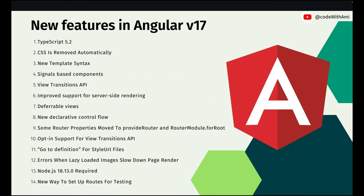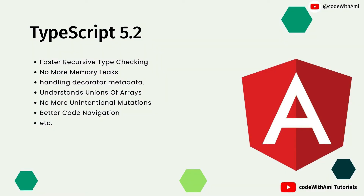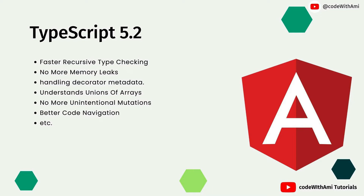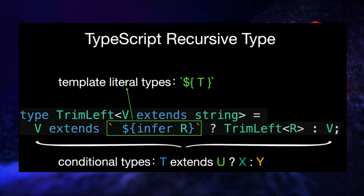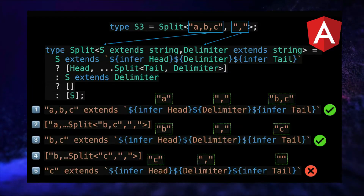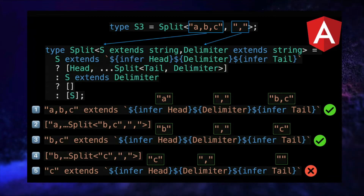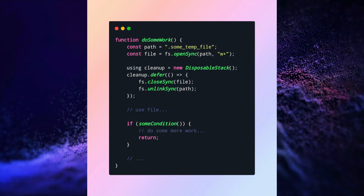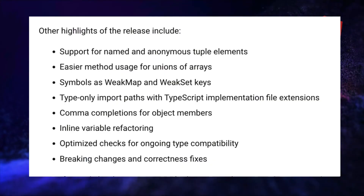The first topic is TypeScript 5.2. Like always, Angular is going to upgrade the TypeScript version in its latest major release. TypeScript 5.2 is the latest version, so Angular 17 will include TypeScript 5.2 support. TypeScript 5.2 comes with many new features, for example faster recursive type checking — so if you're using code or a library that uses recursive types, you will see some performance improvements. In tests it showed a 33% performance boost. We also get no memory leaks.